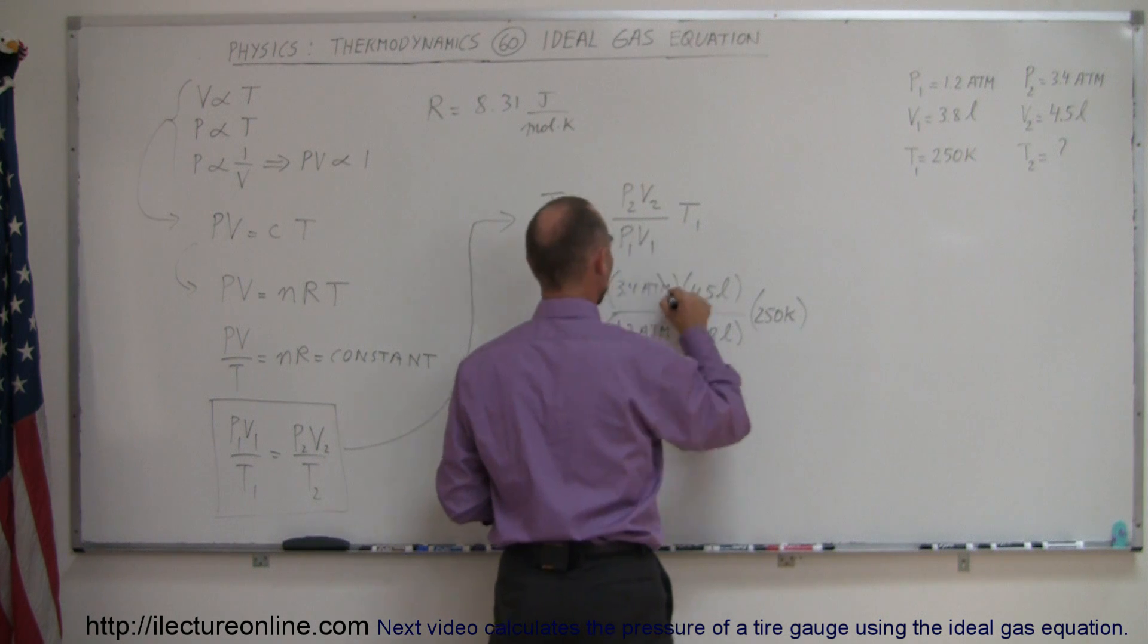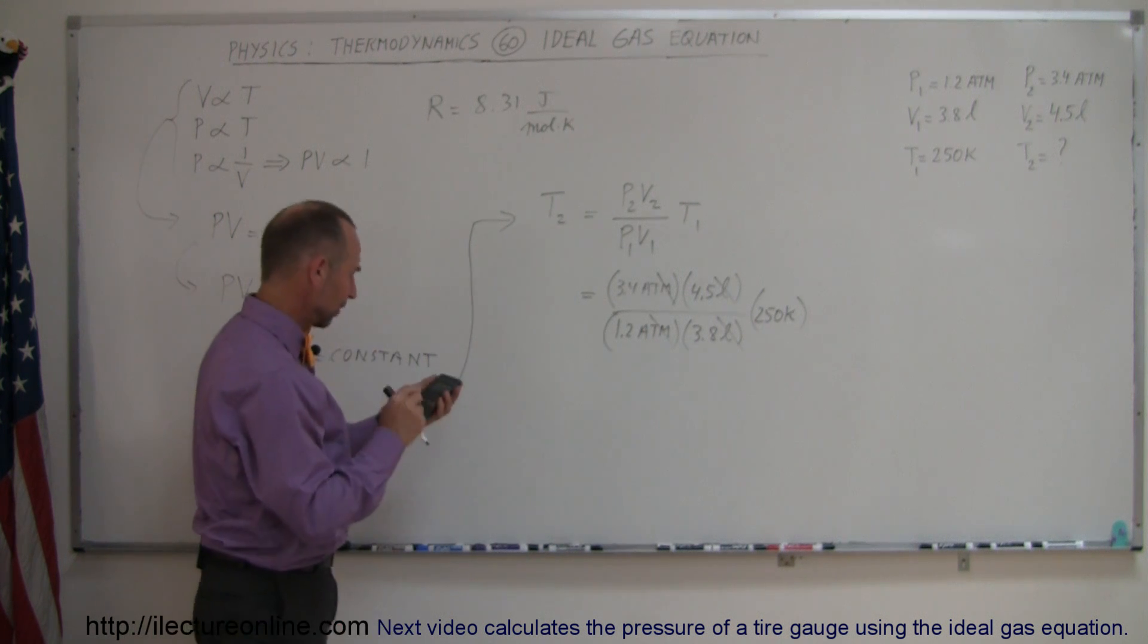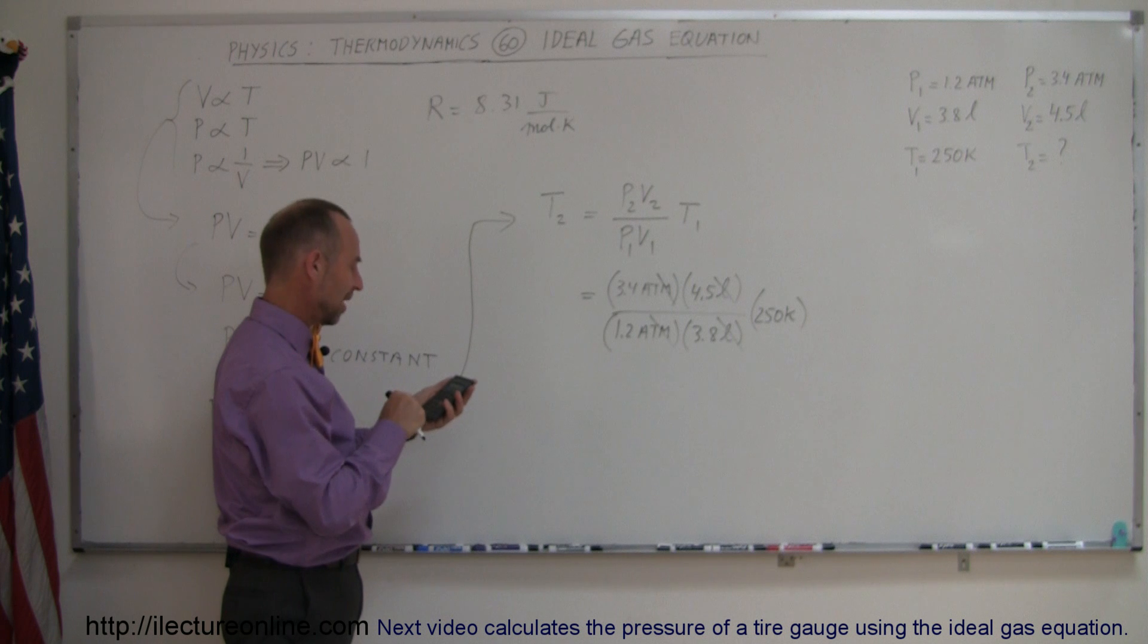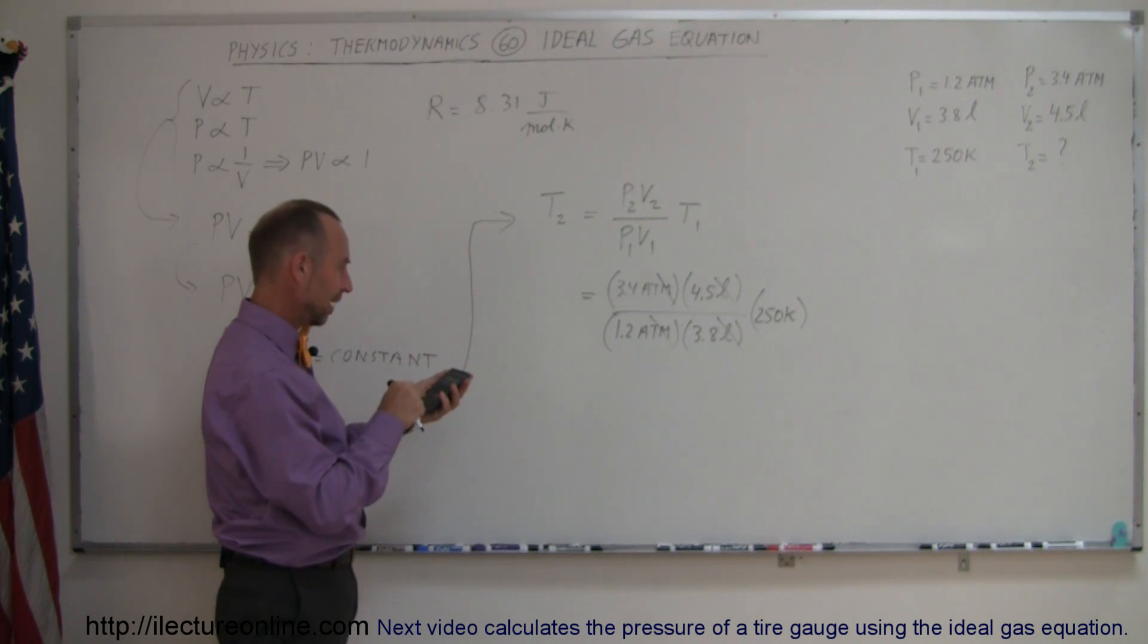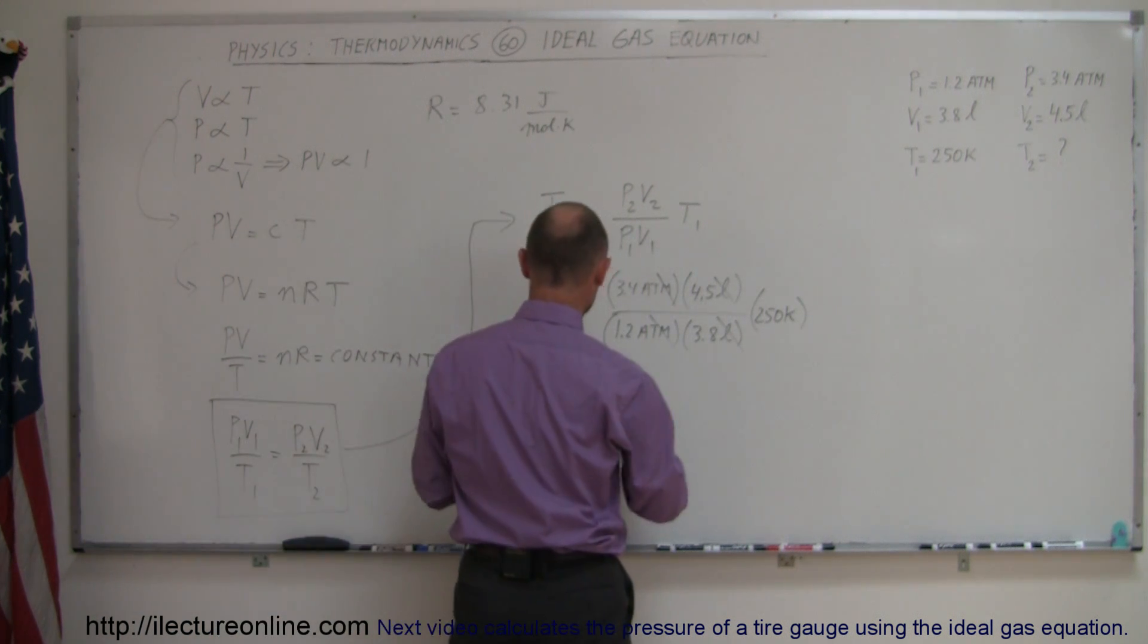And then you can see that the atmospheres cancel, the liters cancel. We're just left with Kelvin. And now with a calculator, we can find out the answer. 3.4 times 4.5 times 250 divided by 1.2 and divided by 3.8. And we get 839.